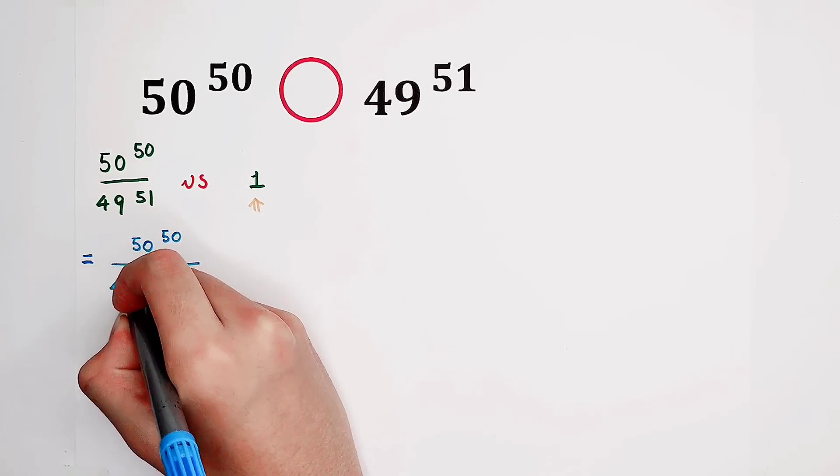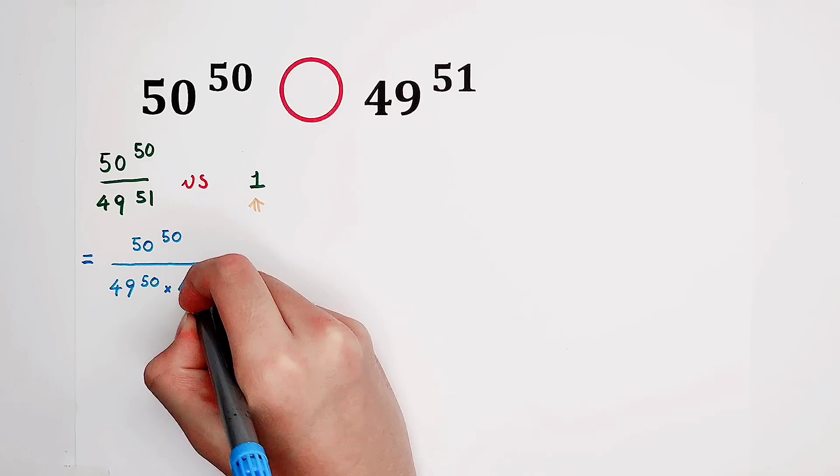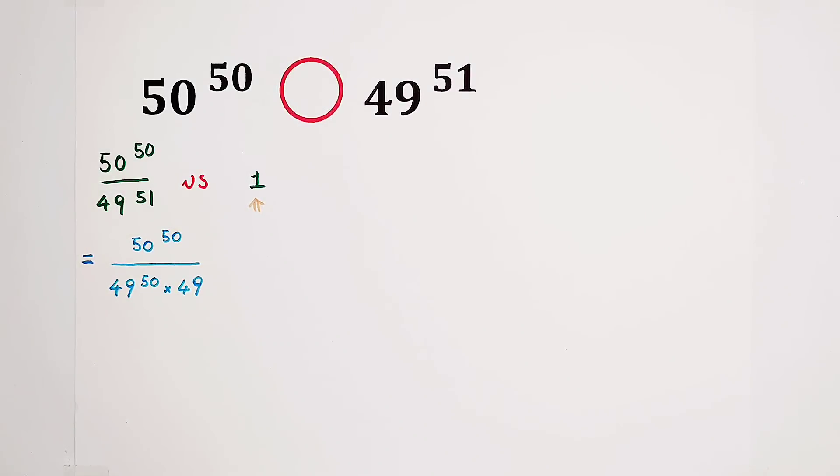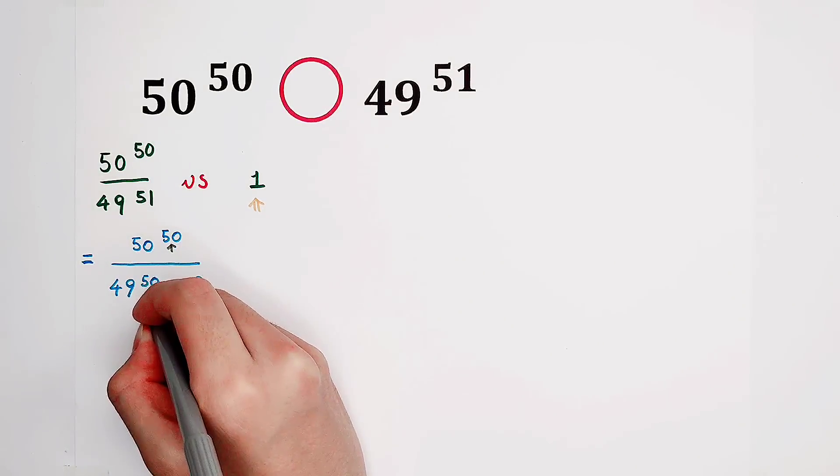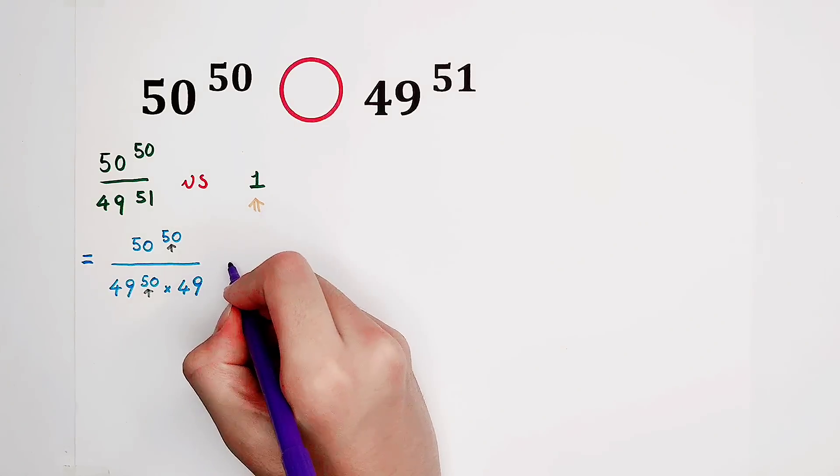So it is 49^50 times 49. Therefore, you can see this 50 and this 49 have the same exponent, 50. So we can simplify it further.